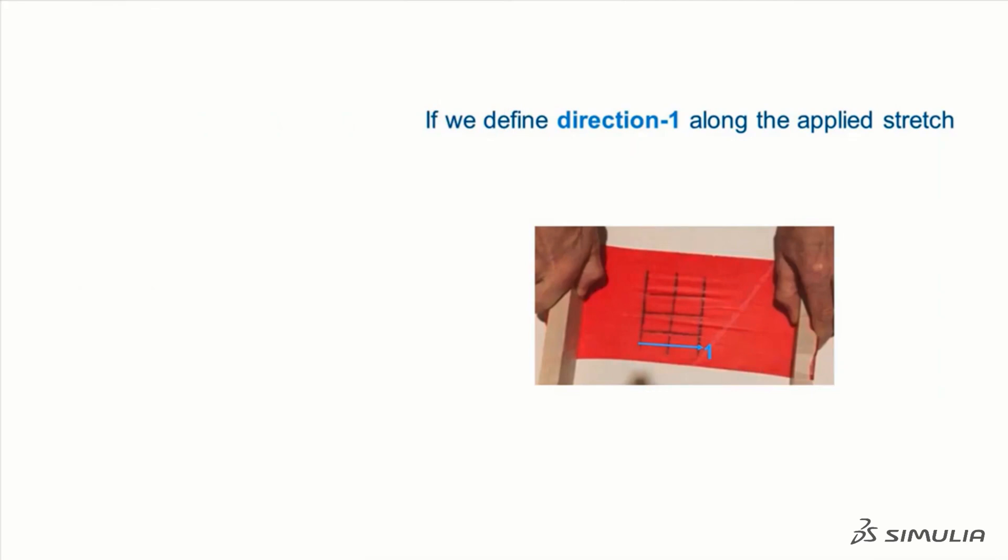If we define direction 1 so that it is aligned with the direction that we are stretching the sheet, and direction 2 so that it is transverse to the direction that we are stretching the sheet, we can measure how much the squares grow or shrink in these two directions.